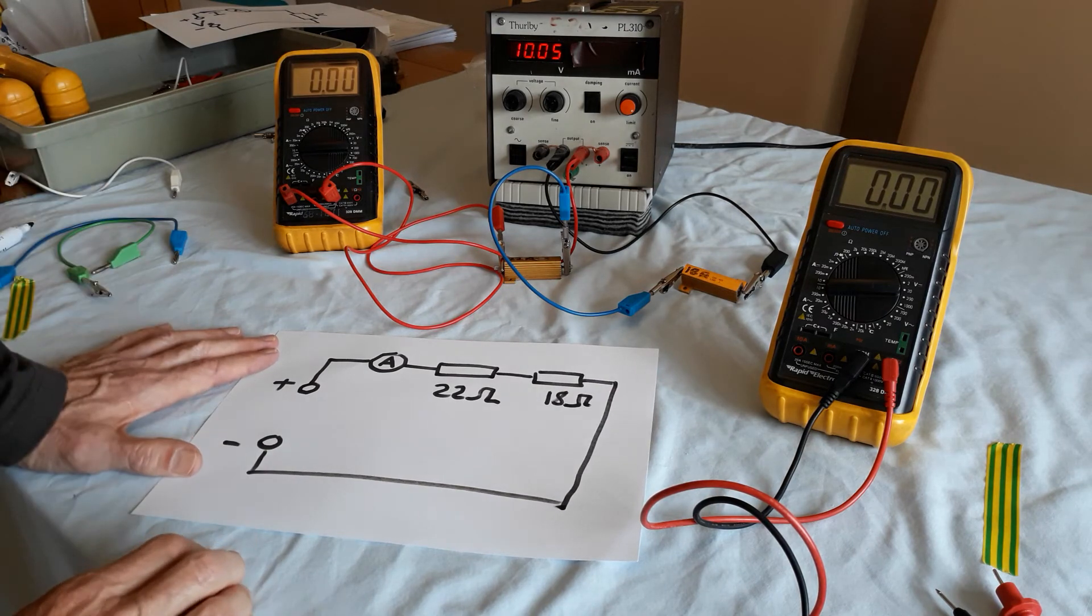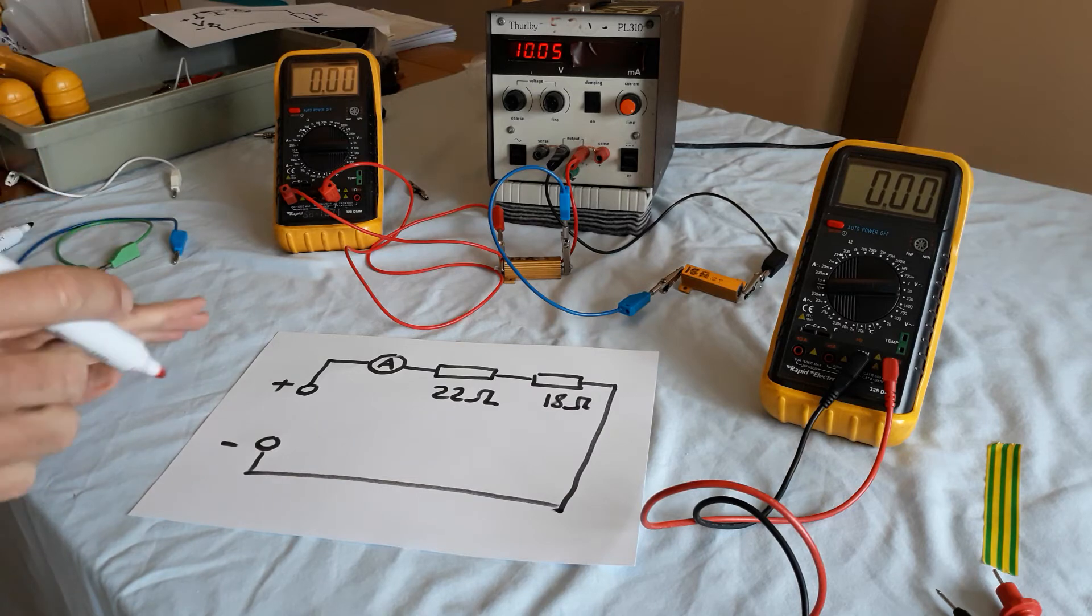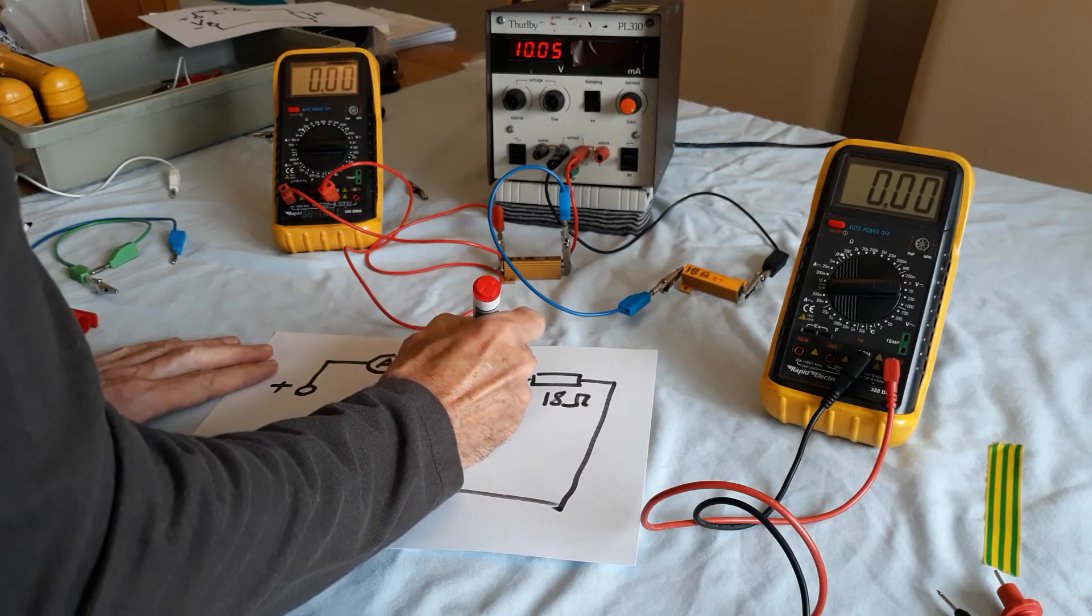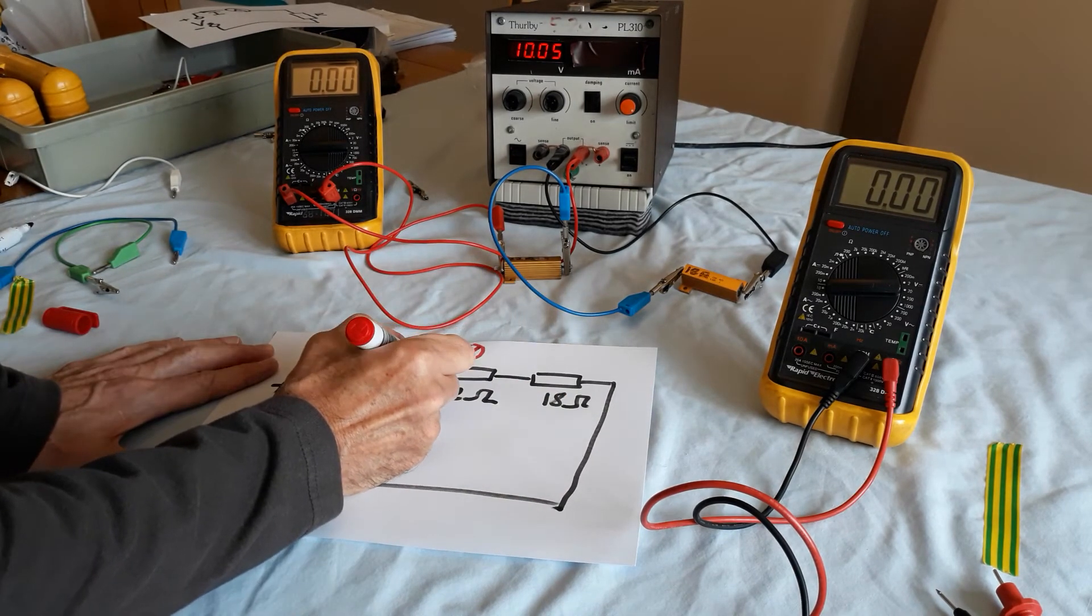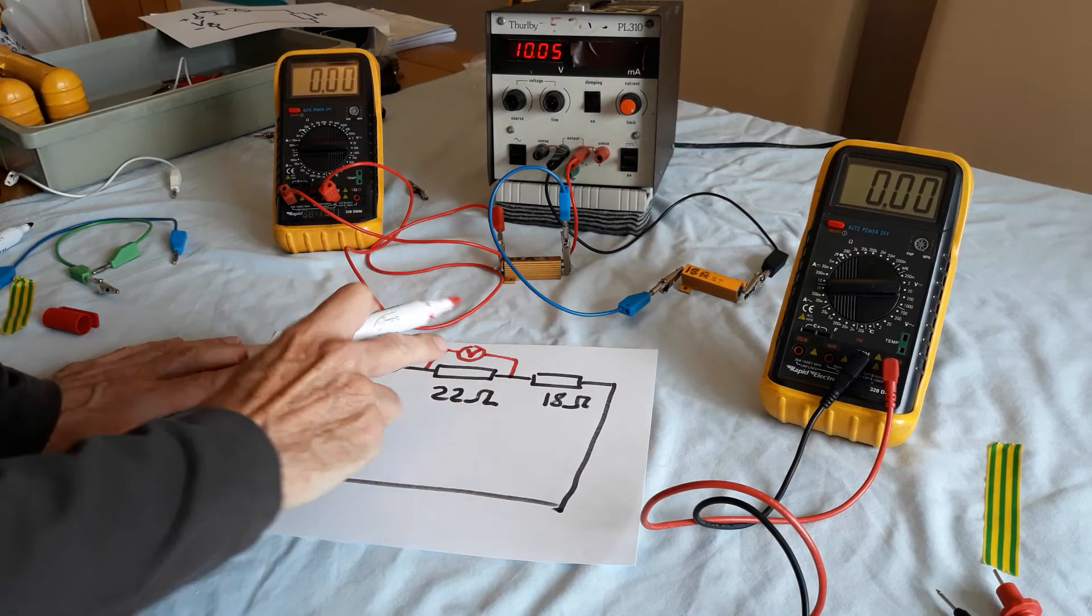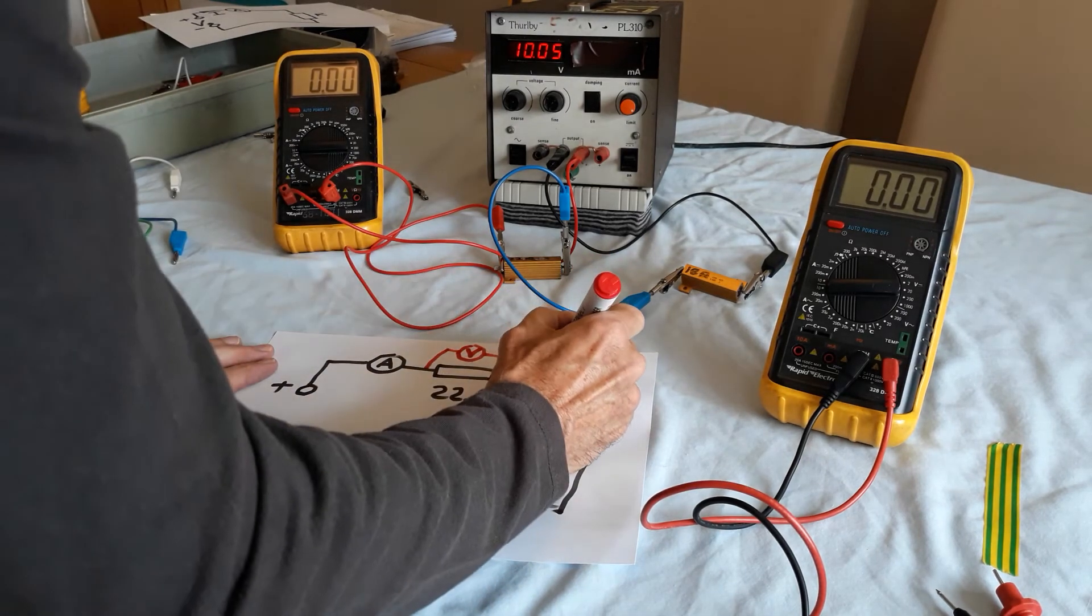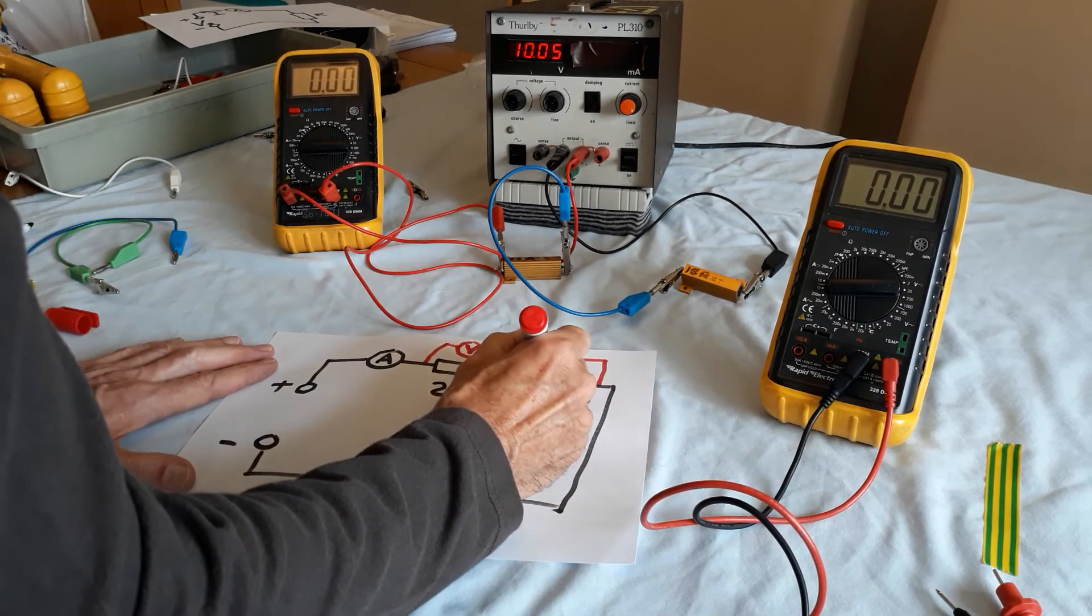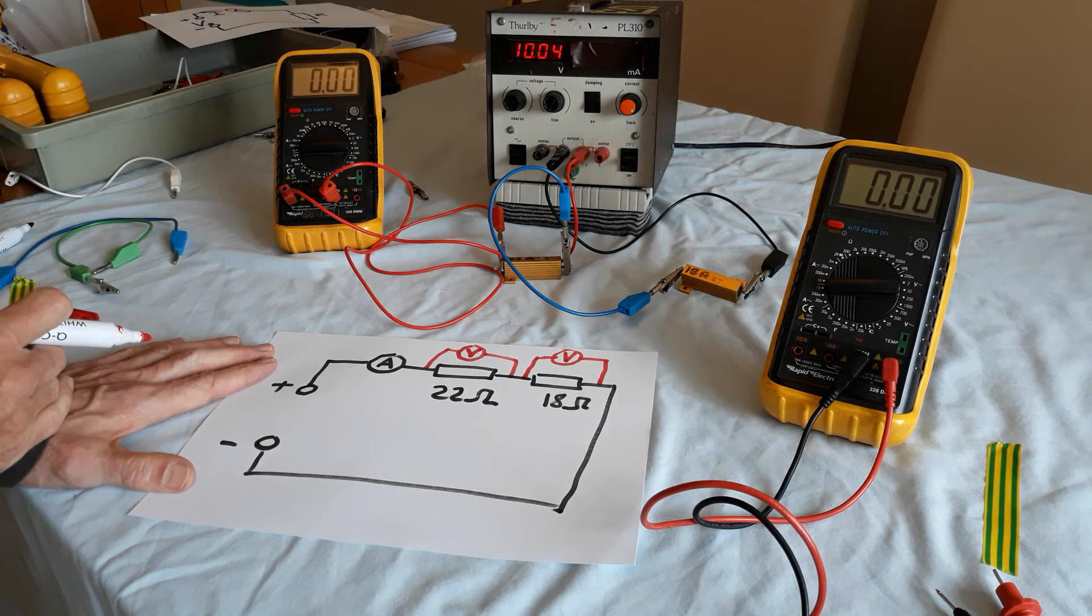What I then did was to take a voltmeter. I haven't drawn this very well, unfortunately, but if I connect a voltmeter, capital V in there, if I connect it across there, I'll measure the voltage across the 22 ohm resistor. And I'll repeat that for you in a second. And if I took a voltmeter and connected it across there, I'll measure the voltage across the 18 ohm resistor.